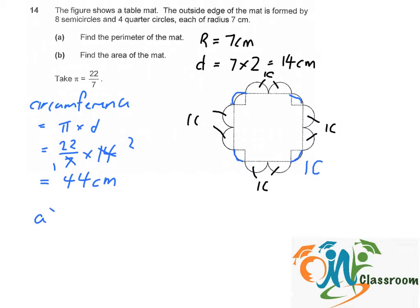And for part A, the perimeter of the whole mat, it will be 44 times 5, because there are all together 5 circles.